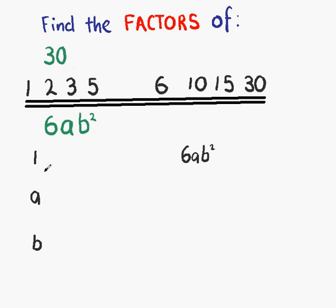Now, thinking of the next number that goes into 6. The next number that goes into 6 is 2. And the other part of that pair is 3ab squared. 2 times 3ab squared is 6ab squared. The next number that goes into 6 is 3. So the other part of that pair is 2ab squared. And the last number that goes into 6 is 6 itself. So 6 is a factor. And 6 times ab squared.